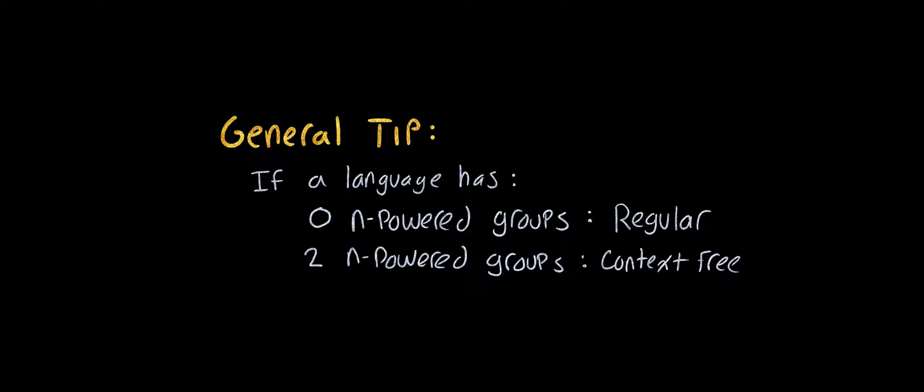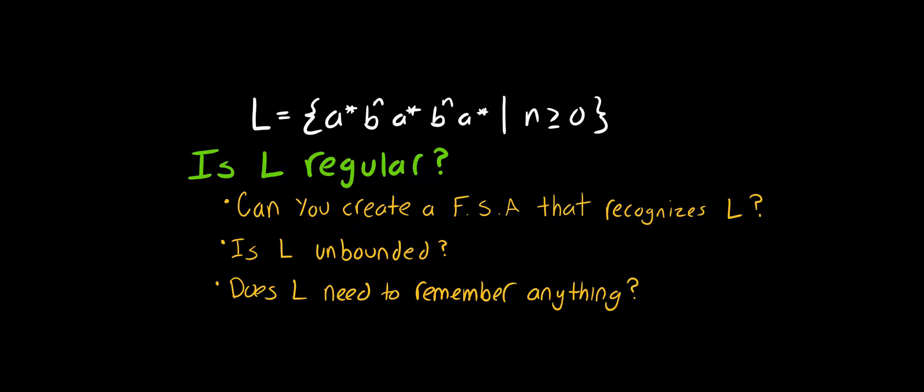So as a general tip, look at the N-powered groups in the language. Typically, if there are 0 N-powered groups, then the language is regular. And if there are 2 N-powered groups, it's context-free. And if there's more than 2, then usually it's non-context-free. So let's come back here. Is L a regular language? And I think that it's pretty clear that it's not a regular language. Maybe a context-free language, but it's not a regular language.